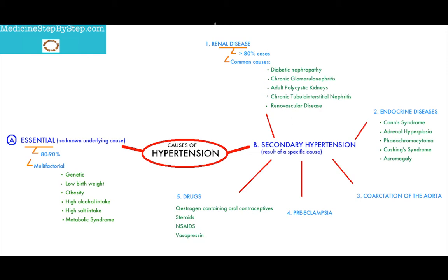Renal disease accounts for over 80% of secondary hypertension cases. Common causes include diabetic nephropathy, chronic glomerulonephritis, adult polycystic kidneys, chronic tubular and cystic nephritis, and renal vascular disease.